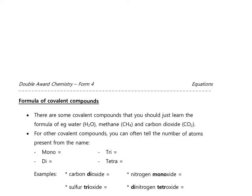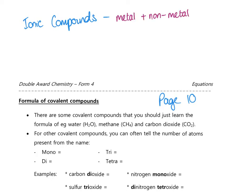We're going to take a brief look at writing the formula of covalent compounds on page 10 of your notes. Up to now we've been looking at ionic compounds, which contain a metal and a non-metal. For example, magnesium chloride: magnesium is in group 2 so it has a valency of 2, chloride is from chlorine in group 7 with a valency of 1. We do our swap and drop and that gives us MgCl₂.